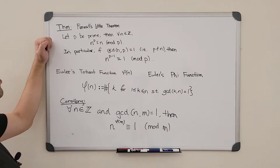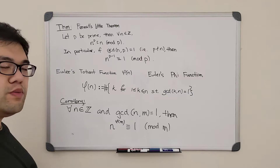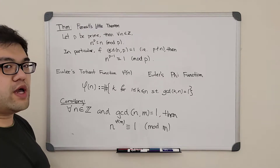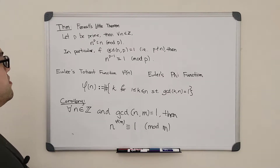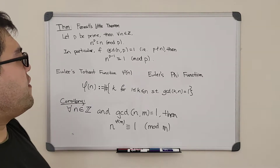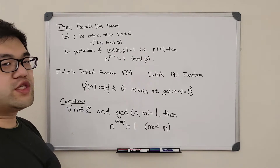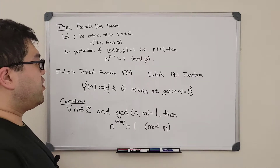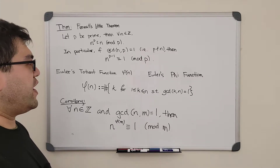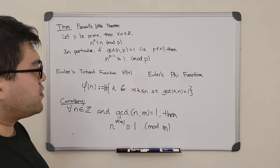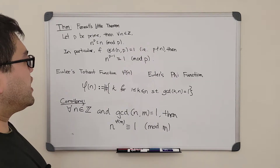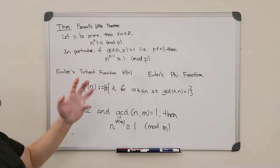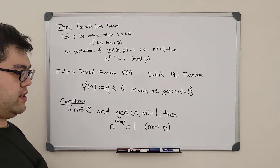First let's introduce the following theorem called Fermat's Little Theorem — and do not confuse this with Fermat's Last Theorem, which says a to the n plus b to the n equals c to the n. Fermat's Little Theorem says the following: let p be a prime number. Then for all integers n, n to the p power is always congruent to n mod p. In particular, if the gcd of n and p equals one — and since p is prime, that's the only alternative — then n raised to the p minus one power is always congruent to 1 mod p. This is easy to verify because we just divide n on both sides when n is not a multiple of p.